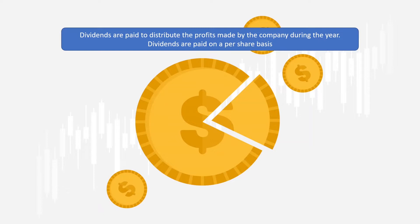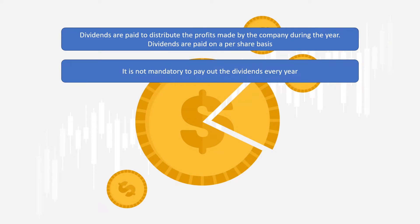For example, during the financial year 2019-20, if Infosys has declared a dividend of Rs. 42 per share, then the dividend is also expressed as a percentage of the face value. In the above case, the face value of Infosys was Rs. 5 and the dividend paid was Rs. 42. Hence, the dividend payout is said to be 840%.